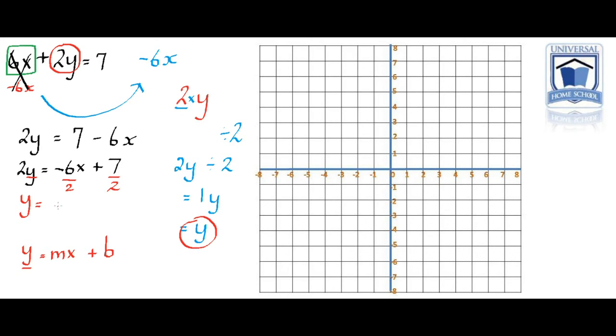So negative 6x divided by 2 will be negative 3x, and 7 divided by 2 would equal 3.5. So it's y equals negative 3x plus 3.5. And there it is in the y equals mx plus b format.